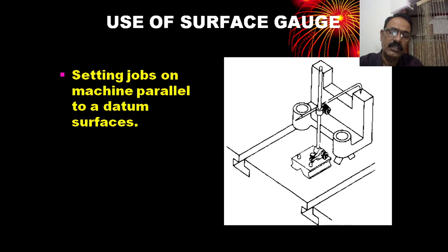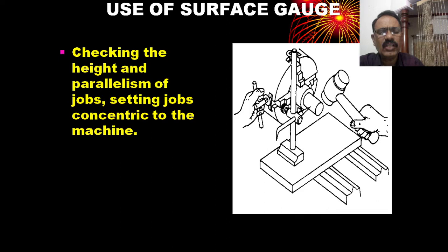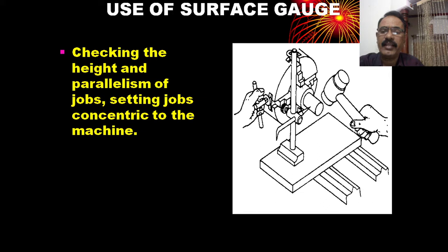It is also used for setting jobs on a machine work table parallel to a datum surface, and also for checking the height and parallelism of the job, and for setting the job concentric to the machine — that means truing.